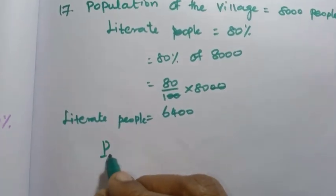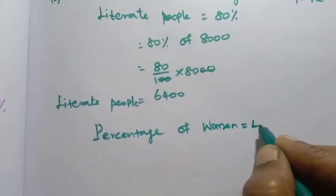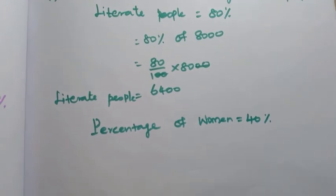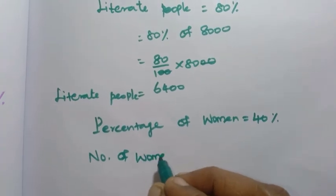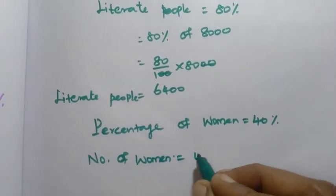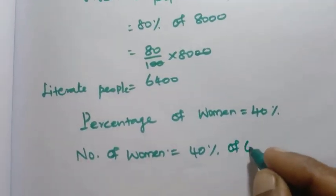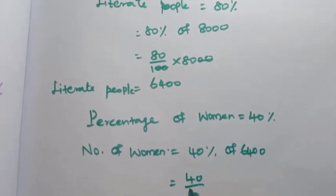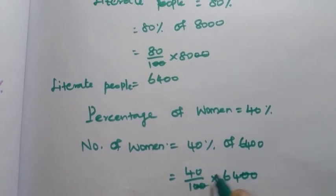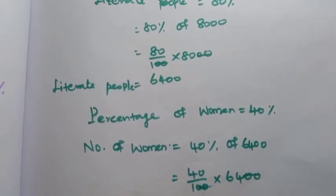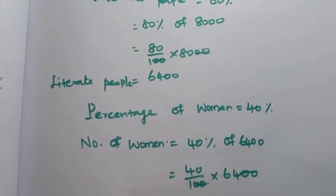Now, the percentage of women among literate people is 40 percent. Number of literate women = 40 percent of 6,400 = 40 by 100 into 6,400. Two zeros cancel: 4 fours are 16, 4 sixes are 24, giving 2,560 literate women.